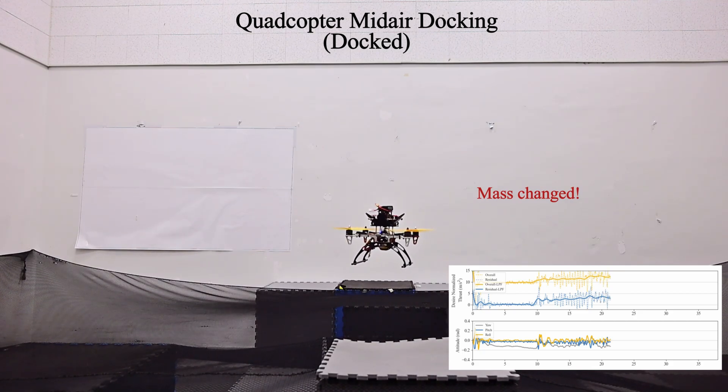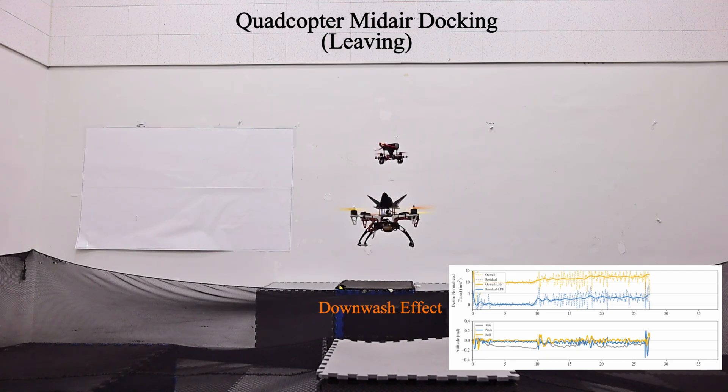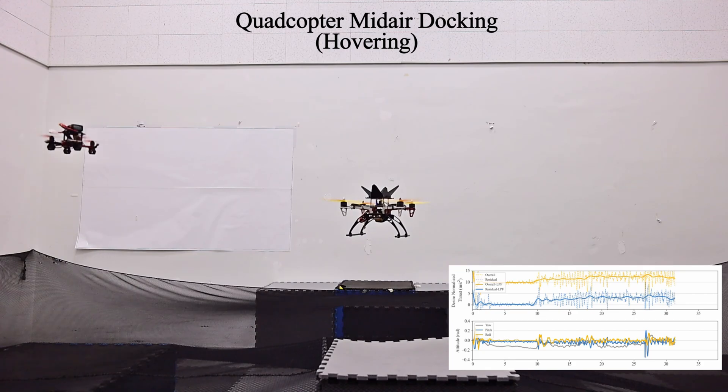Then, a payload is added to the large quadcopter. But the controller doesn't know the mass change explicitly. When the small quadcopter leaves, the downward force reappears and reduces slowly, so we can see the residual thrust command also decreases gradually.